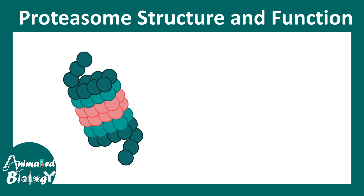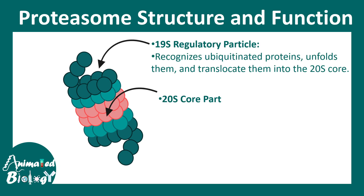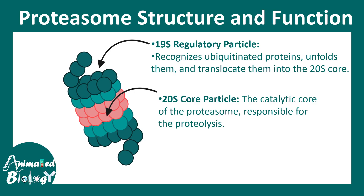The proteasome has different components. It has a 19S regulatory particle which recognizes ubiquitinated proteins, unfolds them, and sends them to the core. The core, marked here in red, is the main particle containing the catalytic unit that literally degrades and chops the protein like a shredding machine. So two things happen: recognition and destruction.